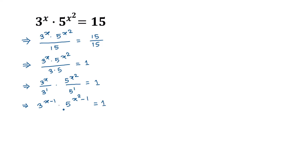Now taking log of both sides, we can write: log of 3 to the power (x minus 1) times 5 to the power (x squared minus 1) is equal to log of 1.